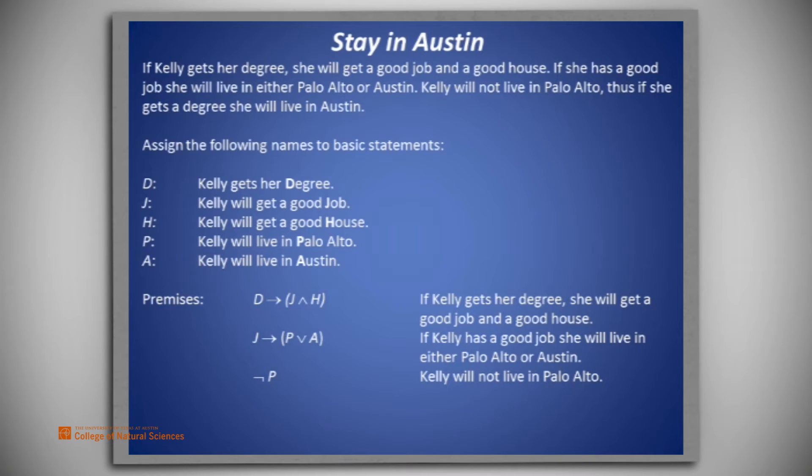That is, Kelly will not live in Palo Alto. The conclusion to be drawn is D implies A. That is, if Kelly gets a degree, she will live in Austin.